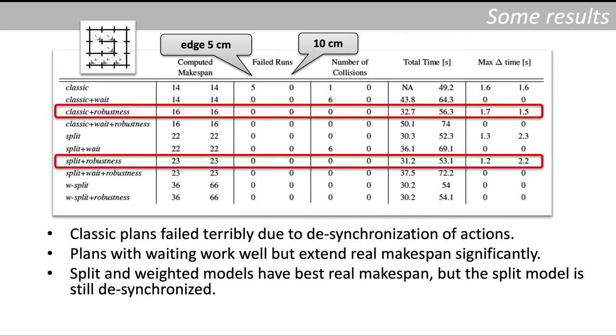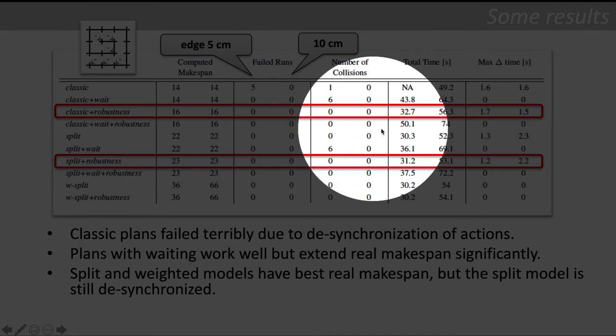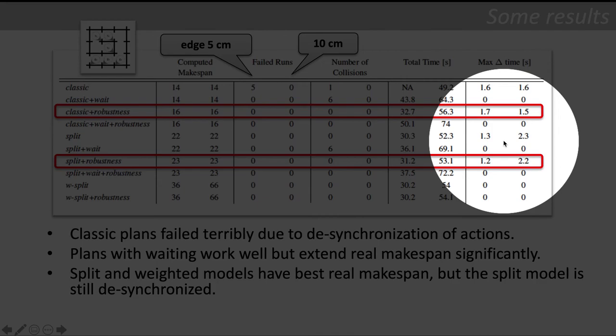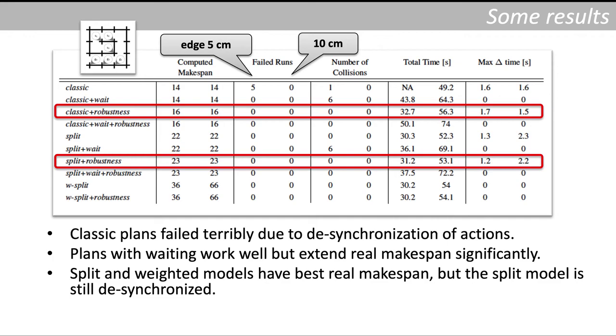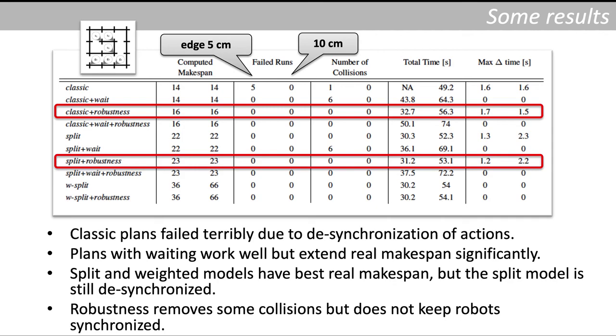We also did comparison with so-called robust models. We use one robustness, which means that when we plan there must be at least one node empty between two agents. So the hope is that if one agent is delayed we can still execute the plan. We can see that we can really execute the plans and the duration of the plan during execution is quite good, but the max delta time indicates that these plans are still desynchronized. So adding robustness is not the way to solve the problem with desynchronization.